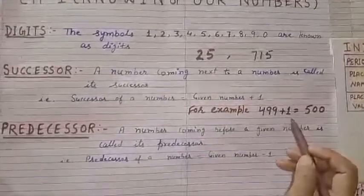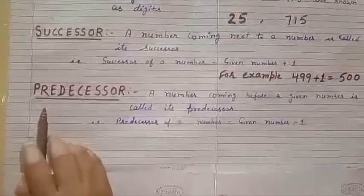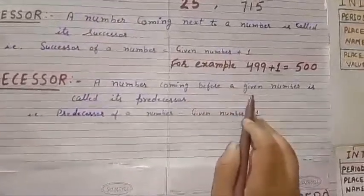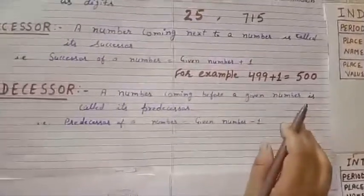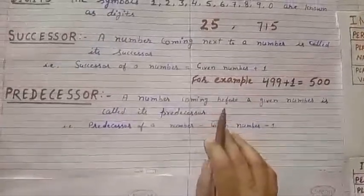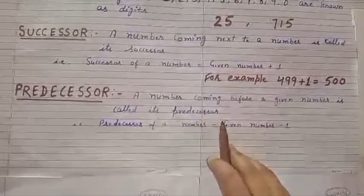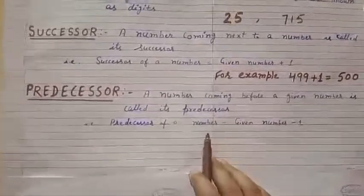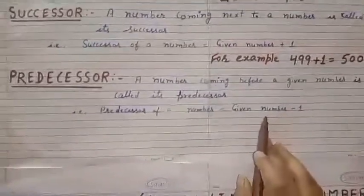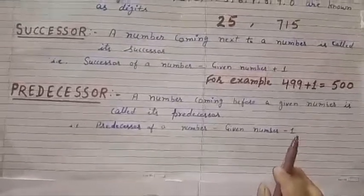The next topic is predecessor. A number coming before a given number is called its predecessor. In other words, the number that comes before a given number is its predecessor. To find the predecessor, use the formula: given number minus one.